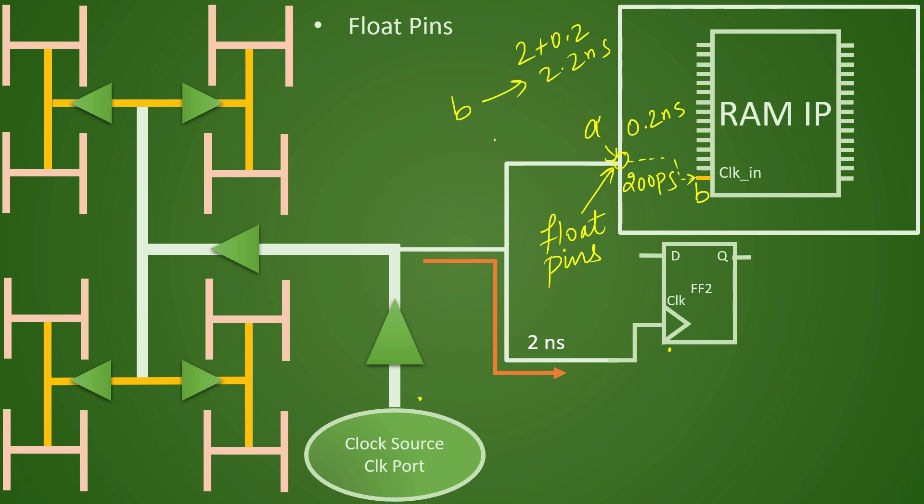But if we are taking an exceptional case and we tell the tool that you take only around 0.2 nanoseconds inside this, so you have only 1.8 nanoseconds left out. In that case, your A will be taking around 1.8 nanoseconds and inside that design, you have 0.2 nanosecond already consumed. Then total latency reaching till B pin of this clock will be 2 nanosecond only. And that way we can meet our target. So this is a concept of float pins.